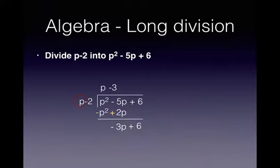Multiply back. Minus 3 by p is minus 3p and minus 3 by minus 2 is plus 6. Change the sign on the bottom line and we get 0. So our answer is just p minus 3.